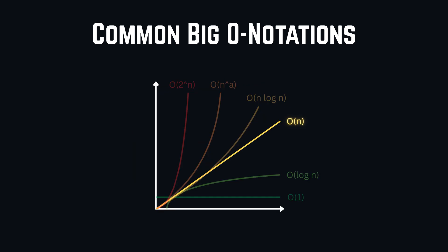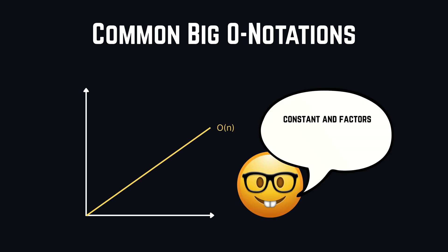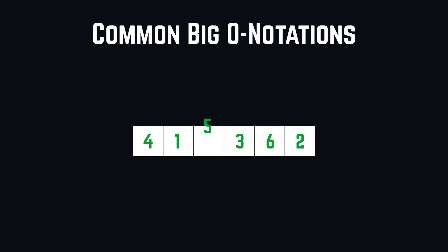O of N, linear time. This case appears when our operations in our code grow proportionally, slash linear, to the given input size. The most common example for this one is when we would iterate through an array with a for loop.